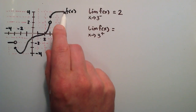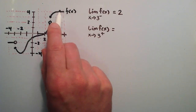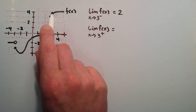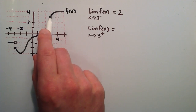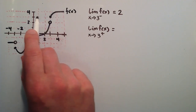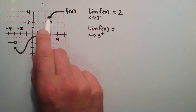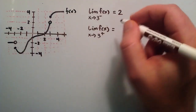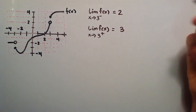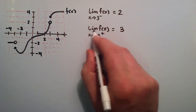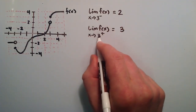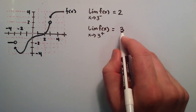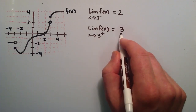Coming in from the right-hand side, as we're getting closer to x equals 3, it looks like the f of 3 value is going to be equal to 3. So we say that the limit of f of x as x approaches 3 from the right exists, and it is 3.